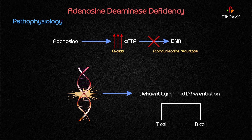When ADA is deficient, adenosine accumulates. This accumulated adenosine eventually results in an excess of dATP, which serves to inhibit ribonucleotide reductase. Ribonucleotide reductase is a key enzyme in the synthesis of DNA. Because of the accumulation of adenosine, the excess dATP, and the inhibition of ribonucleotide reductase, DNA synthesis cannot happen, leading to defective DNA synthesis.